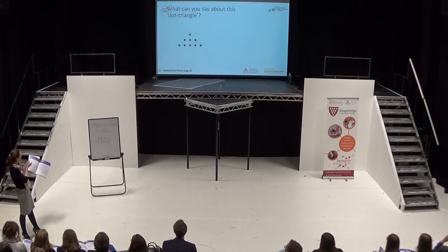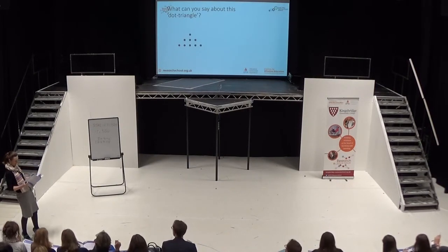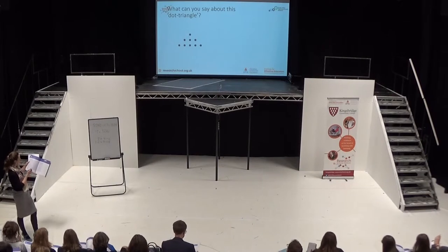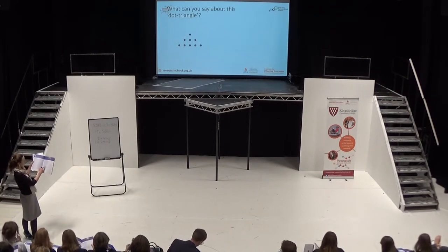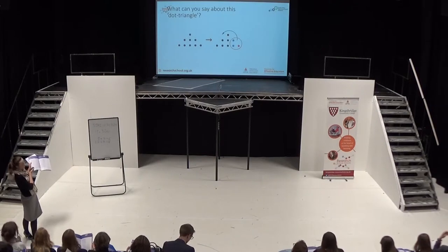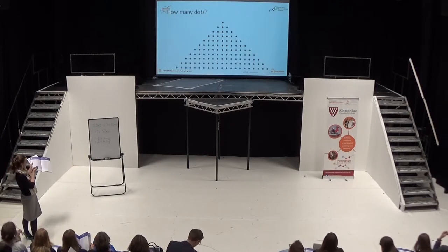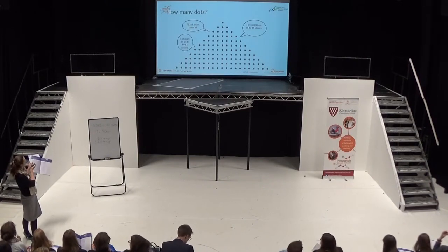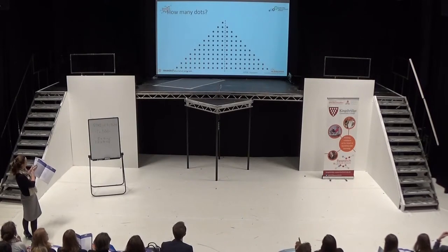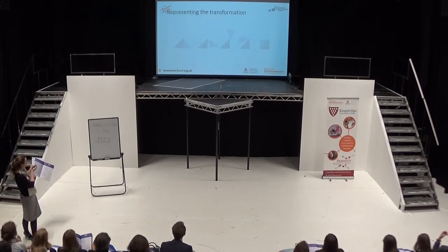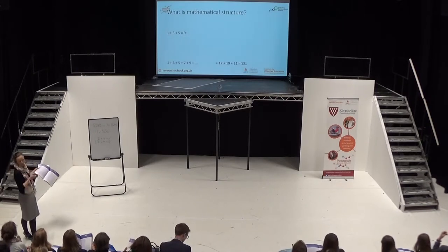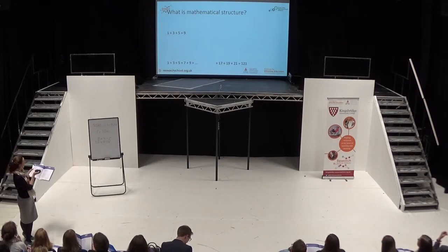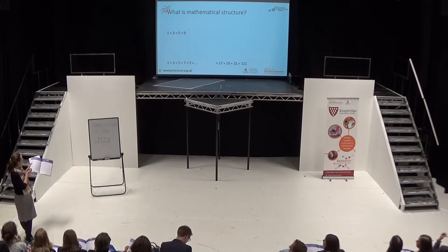I'm not going to talk through this example, mainly because it's exposed very clearly in the presentations: a task that helps and supports generalisation about how adding consecutive odd numbers gives a square number every time. So this idea that if I add the first three odd numbers I get three squared, and adding eleven odd numbers gives eleven squared.